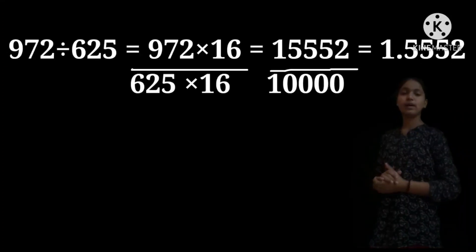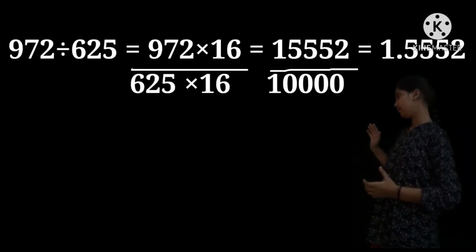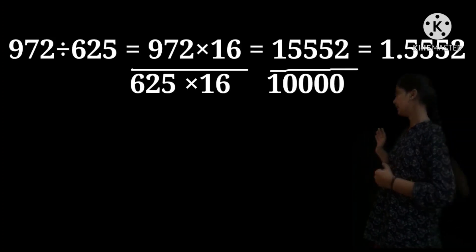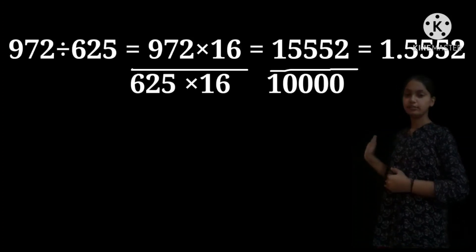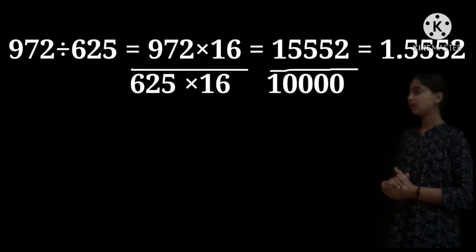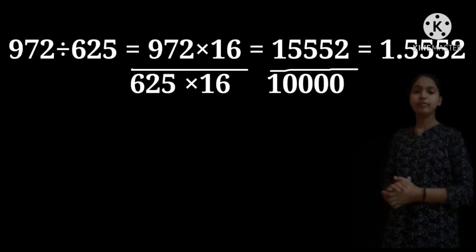Let us see dividing any number by 625. Just look at the example here. We should multiply 16 to the numerator and denominator. Let us multiply: the numerator result is 15,552, and 625 into 16 is 10,000. Let us divide them. The answer is 1.5552. It's very easy — in the denominator we have 10,000, and in the numerator we have 15,552. We should keep 4 digits before the decimal point. The answer is 1.5552.